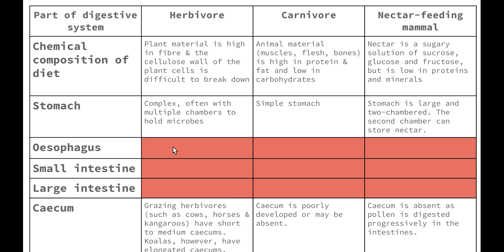Moving on to our carnivore: we know that carnivores eat animal material including flesh, bones and muscles of animals, which is high in protein and fat and low in carbohydrates. As a result, carnivores have quite simple stomachs because the food is quite easy to break down. The pH of the stomach is extremely low because it contains a lot more acids and enzymes than the stomach of herbivores, and it's those acids and enzymes that really help to break down the animal material quite easily.